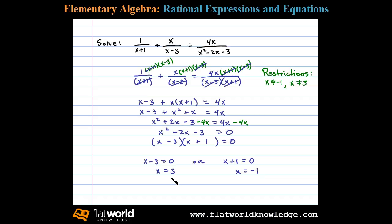Now notice x equals 3 is a restriction. If we evaluate in the original we get 0 in the denominator. Also negative 1 is a restriction. So both our possible solutions are extraneous and if both solutions are extraneous then the original equation has no solution.